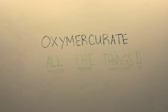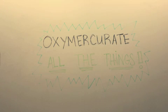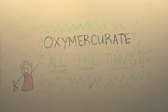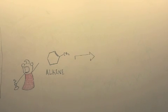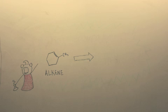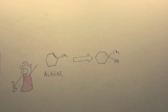Oxymercurate ALL THE THINGS — a short film to help you understand oxymercuration-reduction of alkenes. Basically, oxymercuration adds an alcohol to the more substituted carbon of a double bond.